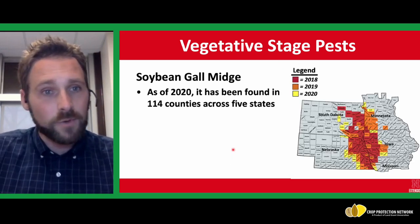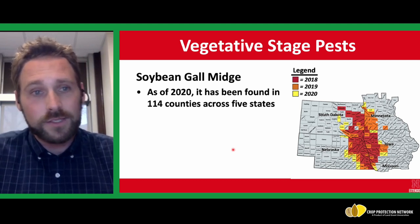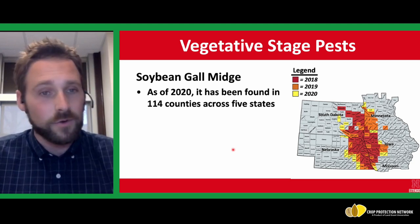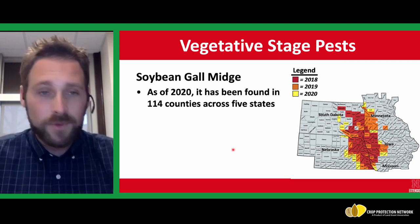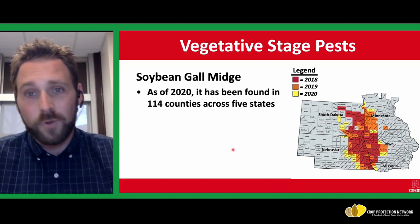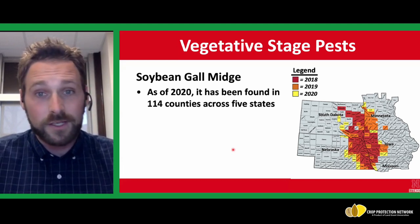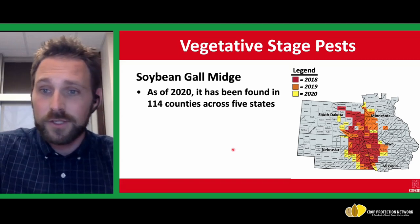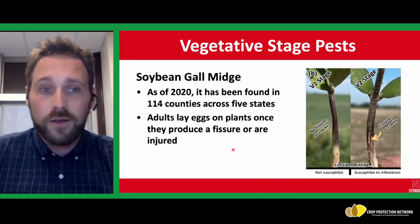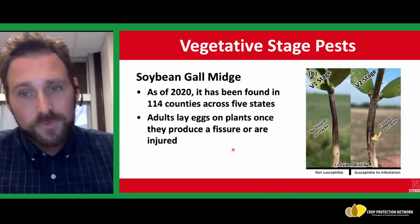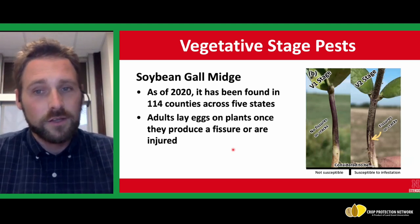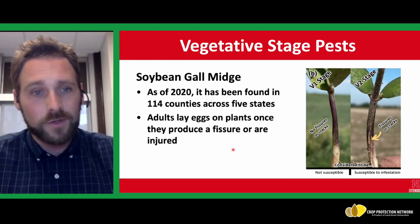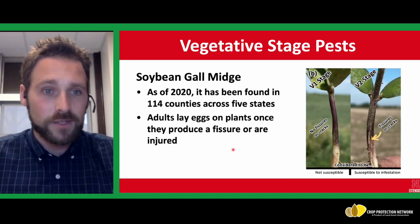To give you an idea of where this insect was as of the end of 2020, it's been found in 114 counties across five states. Depending on where your area is this summer, you may be in counties that are already infested or not. If you're in one of those gray counties that's not been documented and you find this insect, please let your local extension agents or extension specialists in those states know. This insect has some special features in how it infests plants, starting with the development stage of soybeans, which is an important scouting tool to understand when and where you might find this insect.